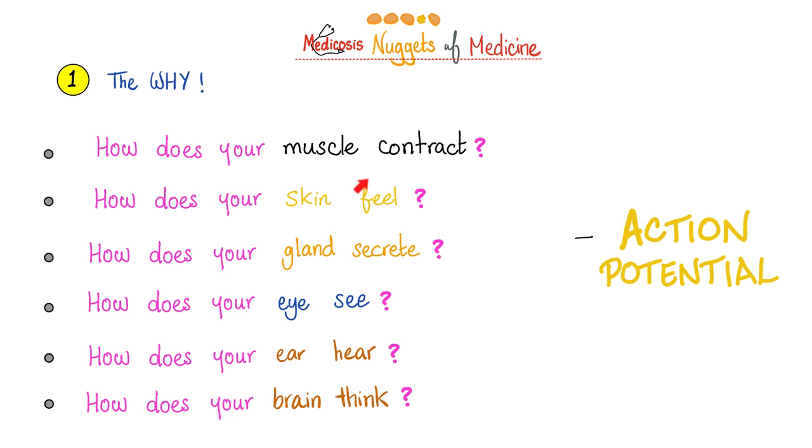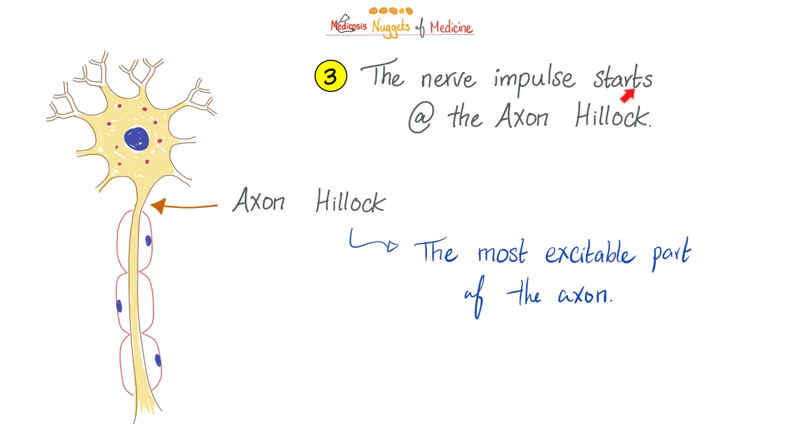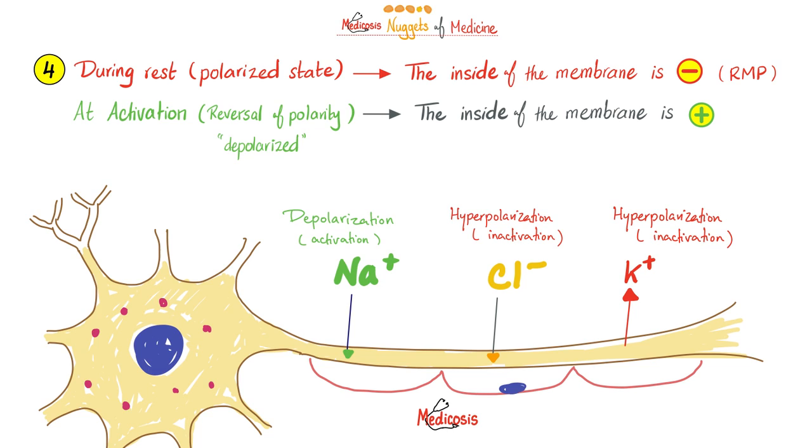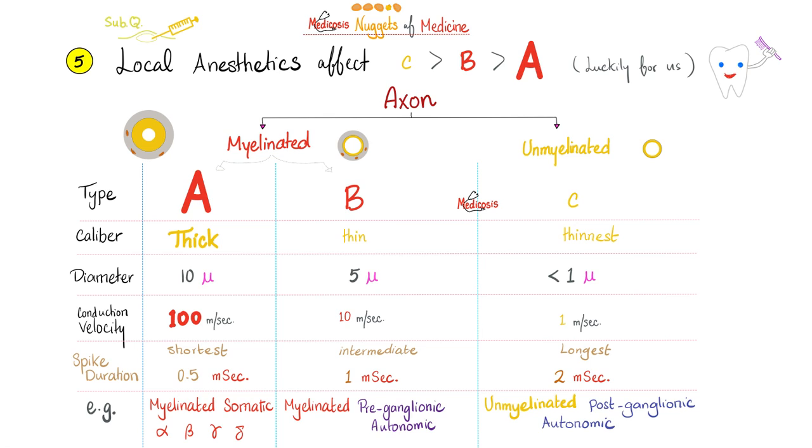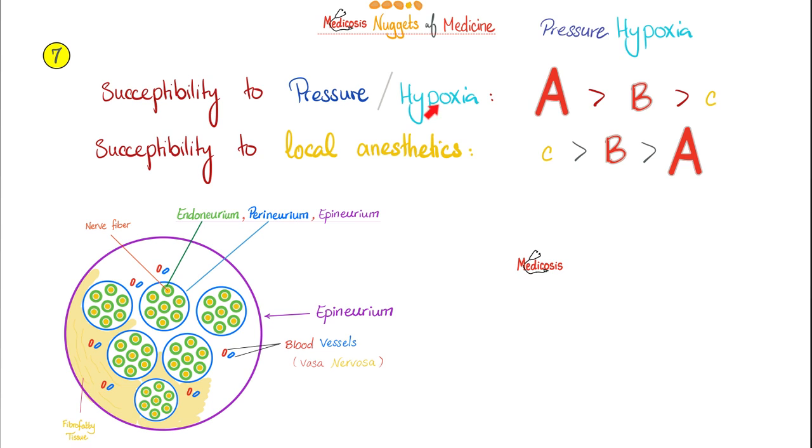Let's review my nuggets. Nugget number 1: Why do you need an action potential? Because action potential is everything. The nerve impulse is unidirectional. The nerve impulse starts at the axon hillock. During resting, the inside is negative and the outside is positive. But upon activation or depolarization, the inside becomes more positive compared to the outside. Local anesthetics affect the small fibers first, the C fibers. However, hypoxia affects the large fibers first, A fibers.